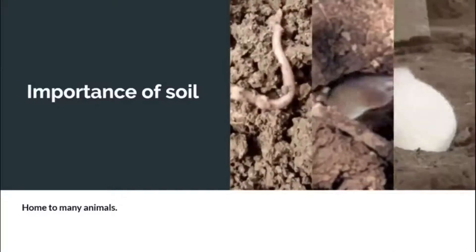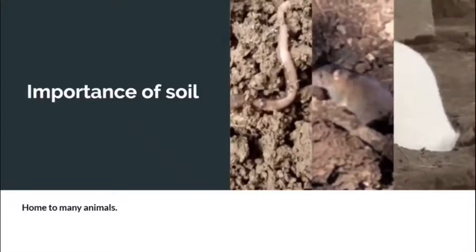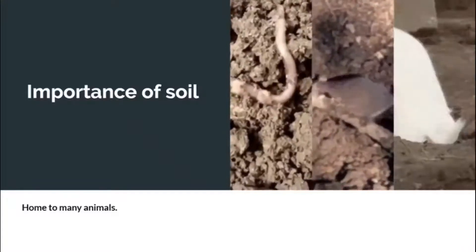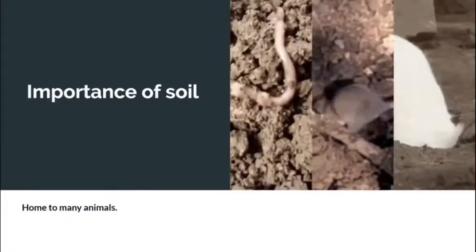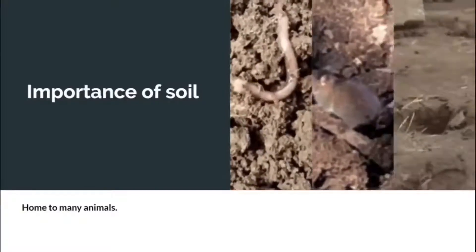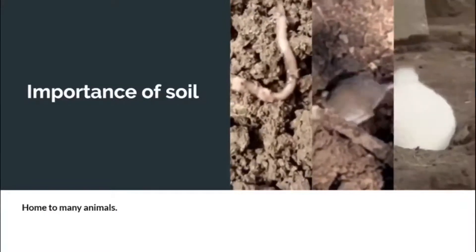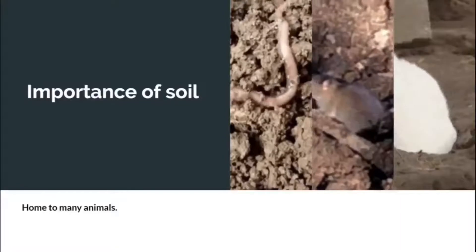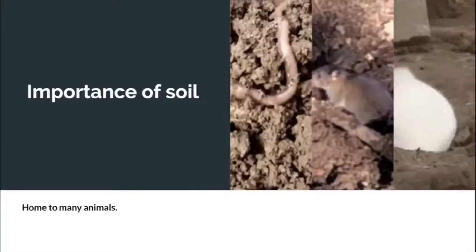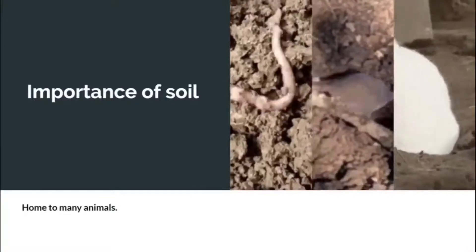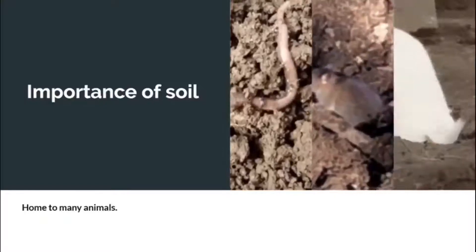Besides being important for plants to grow, soil is also important for many animals, as it provides habitat to them — like earthworms, rabbits, mice, bacteria, etc. And these animals indirectly help in making the soil more fertile.